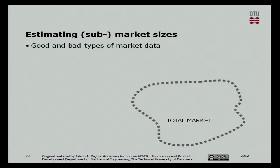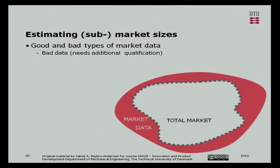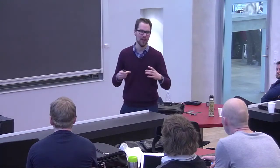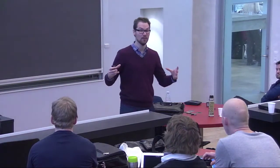Market data — how do we handle that? Well, it's hard to come across. A bad type would be something where you would afterwards have to qualify it to find out your actual market size, because the qualification process is kind of hard. For instance, we have a certain number from statistics, but only a part of that number was actually real customers to our product. How do you get from the first number to the second number? You should always write down the basis for your qualification.